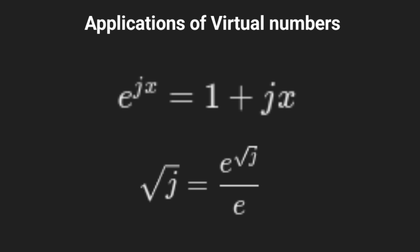The square root of j is defined using logarithmic properties. It simplifies into a transcendental equation where the square root of j equals e to the power of the square root of j, divided by e.